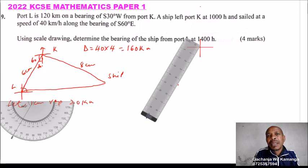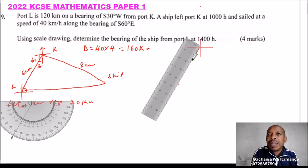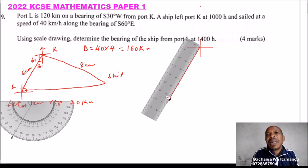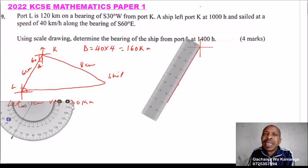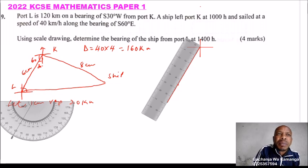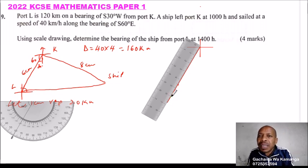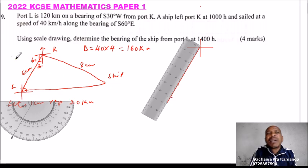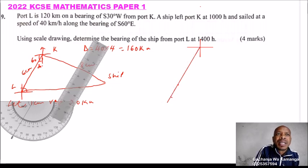We draw the line toward L. Our scale is 1 cm = 20 km, so we measure 6 centimeters along that line. That gives us point L.